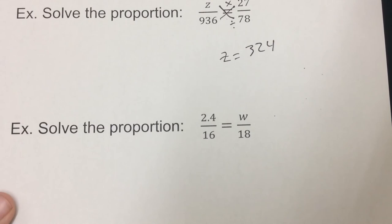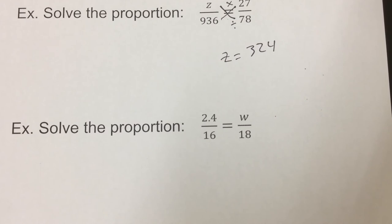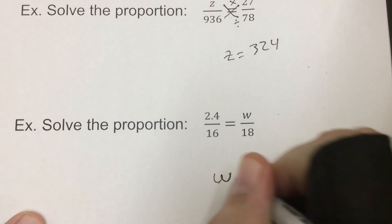So, last problem. Again, two numbers are crossing each other. 2.4 times 18, divided by the one across from the W. So, divide by 16. So, W would equal 2.7.